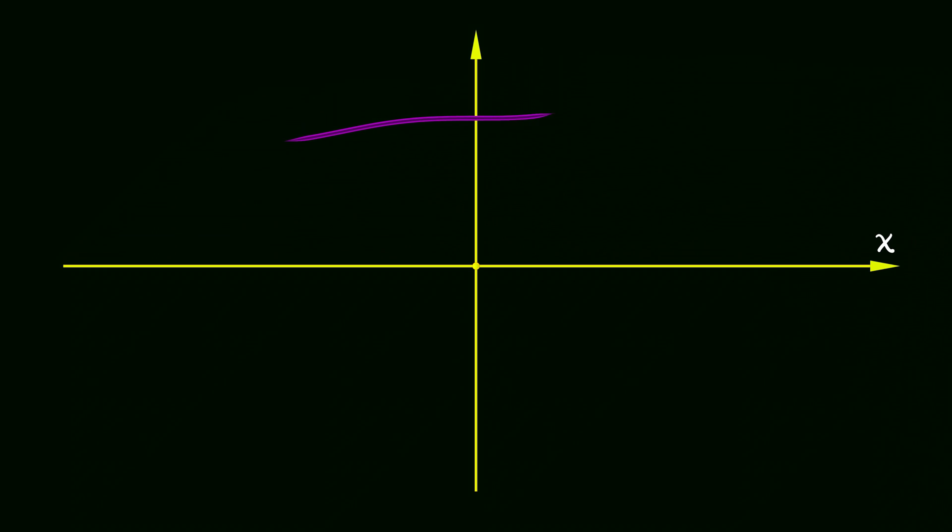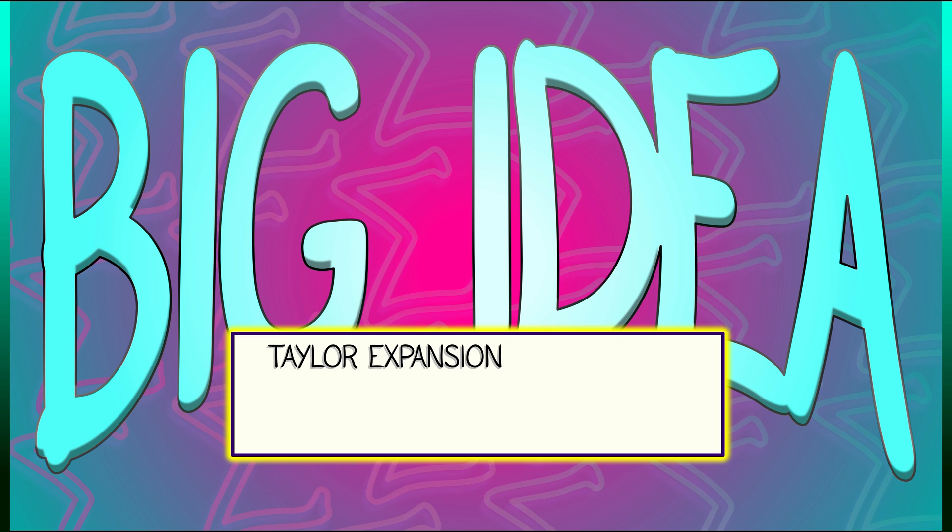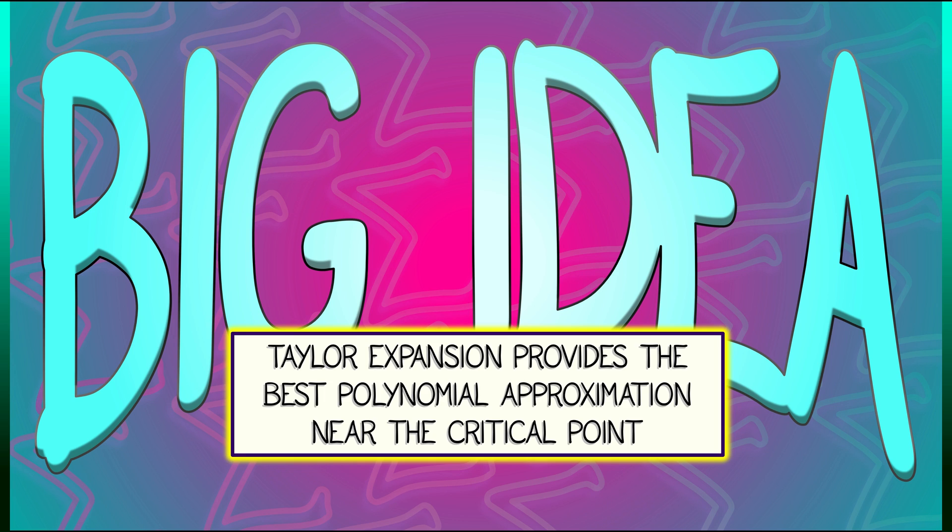To summarize, the big idea is that we can use Taylor Expansion to see what is happening locally near a critical point, to get information beyond the second derivative test.